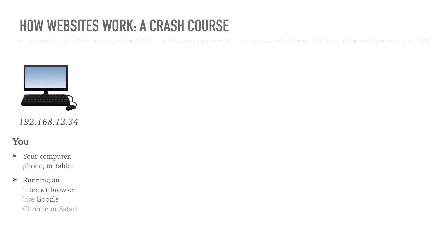This process actually begins with you. Take a look on the screen and you're going to see a computer, and underneath the computer is a number. That number is called an IP address. Every device in the world that's connected to the internet has its own IP address. An IP address is kind of like the street address of your house. If houses didn't have street addresses, whenever someone tried to mail you a letter, the post office wouldn't know where to deliver it. If your computer didn't have an address, whenever you tried to load a website, the website wouldn't know where to send that information.